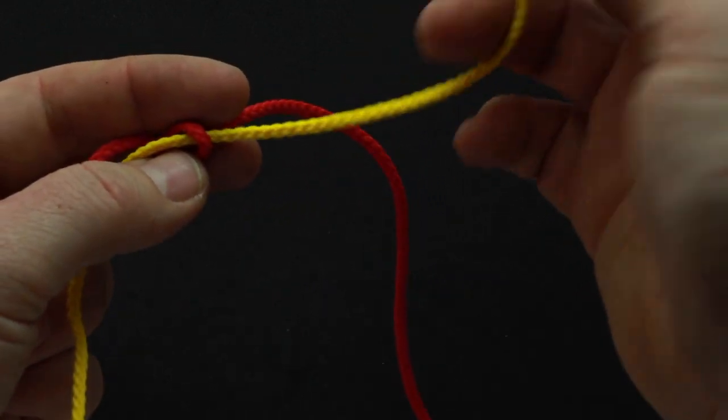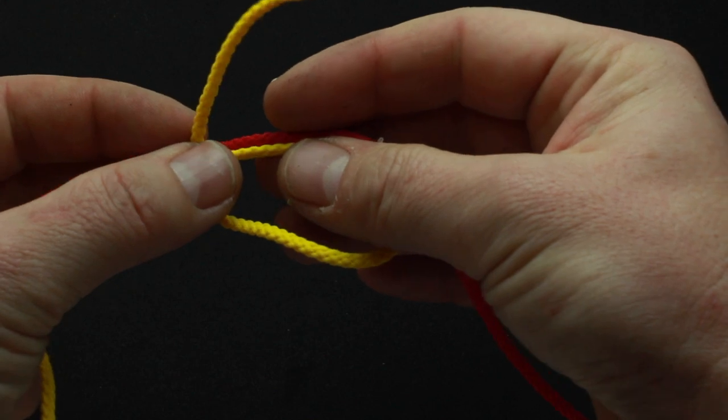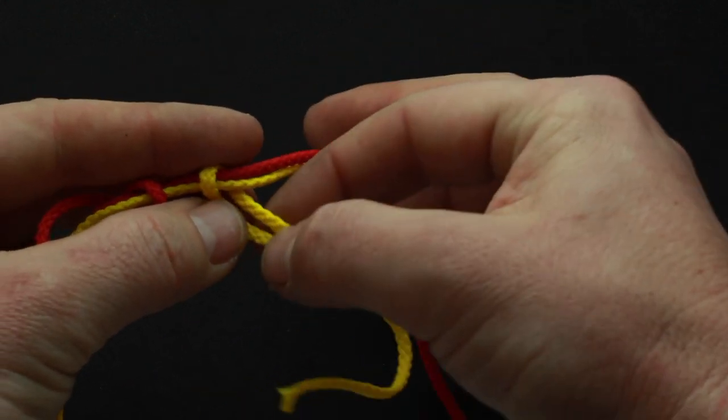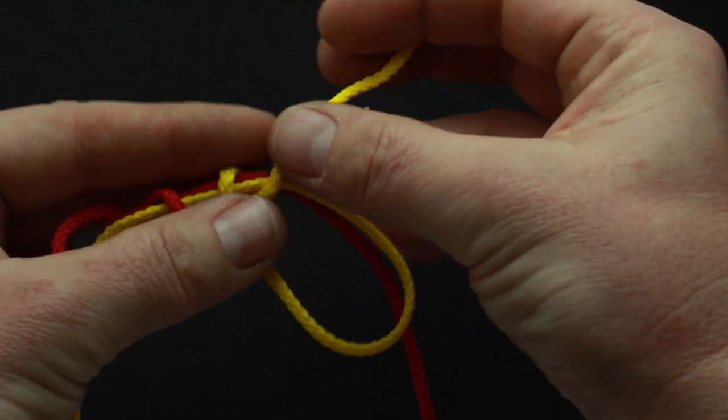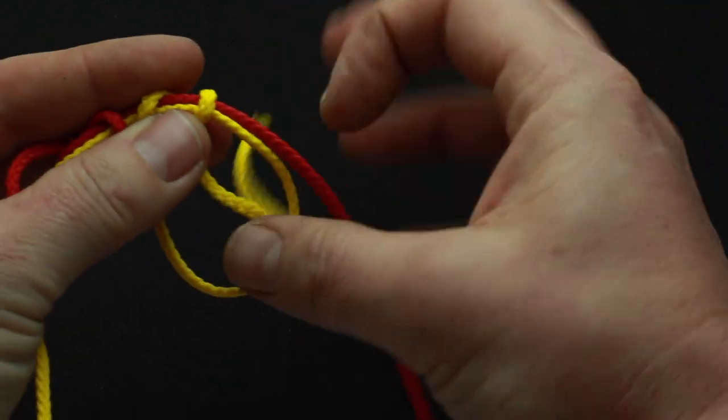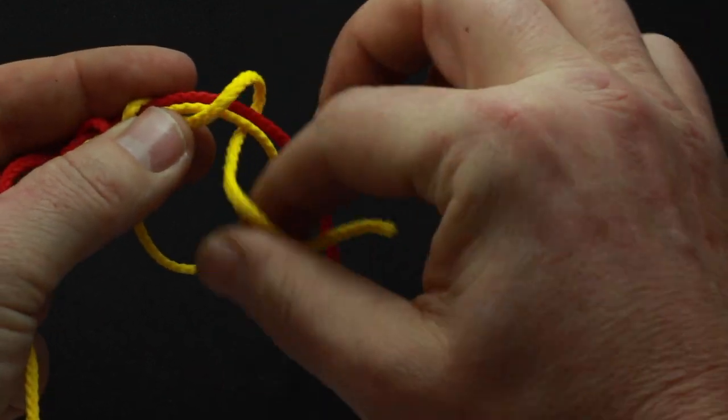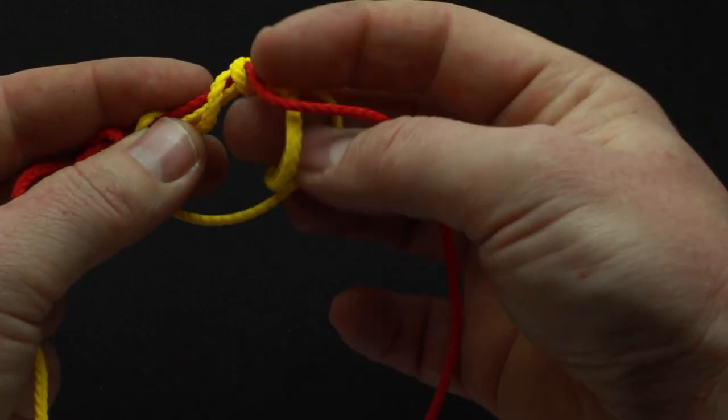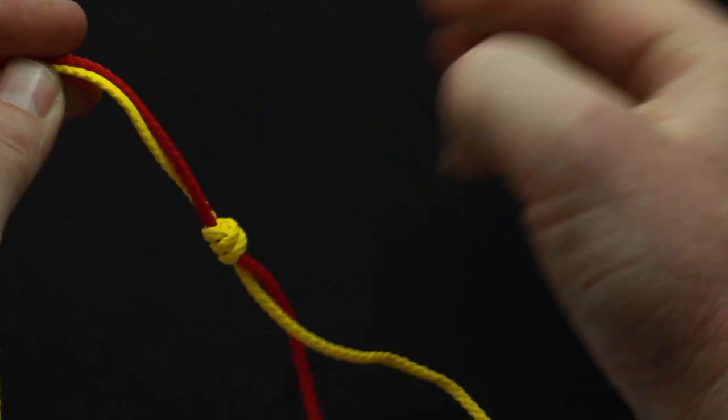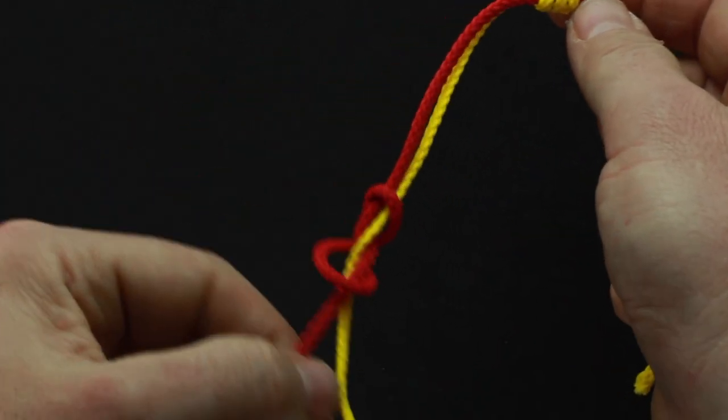Then go inside both the main bit of line and the dropper line. I tend to go through three or four times, so it's once, twice, three times is enough on that. Pull that tight, and then you've got to basically tweak each bit of line to keep it nice and tight.